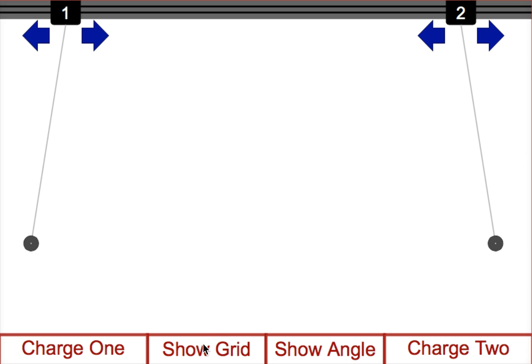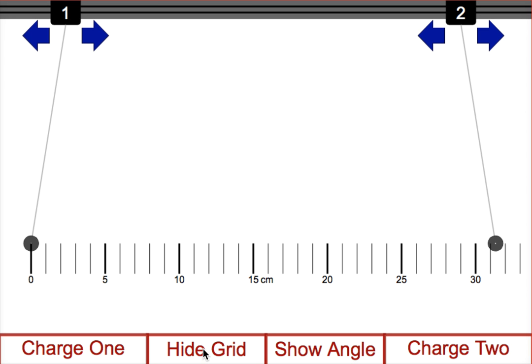If you want to see how far apart the two pith balls are, you can hit Show Grid. It will put one pith ball at the 0 cm mark, and then by estimating, you can see where the other pith ball is.